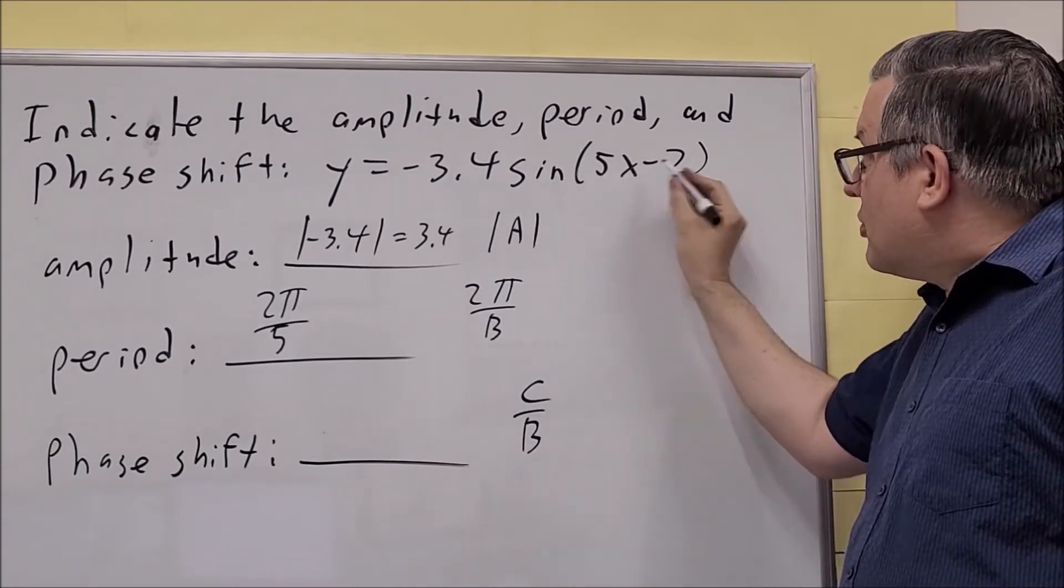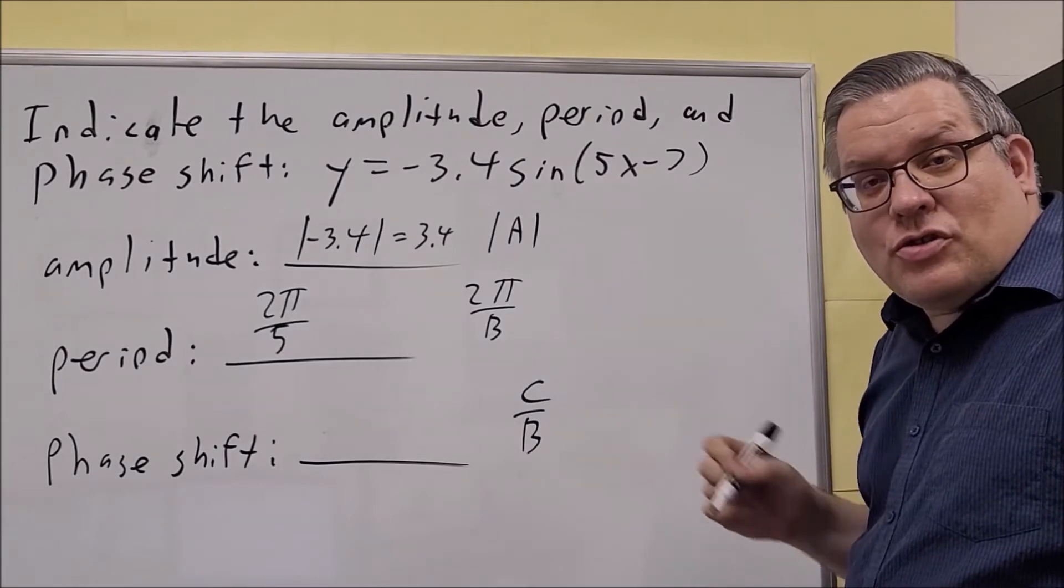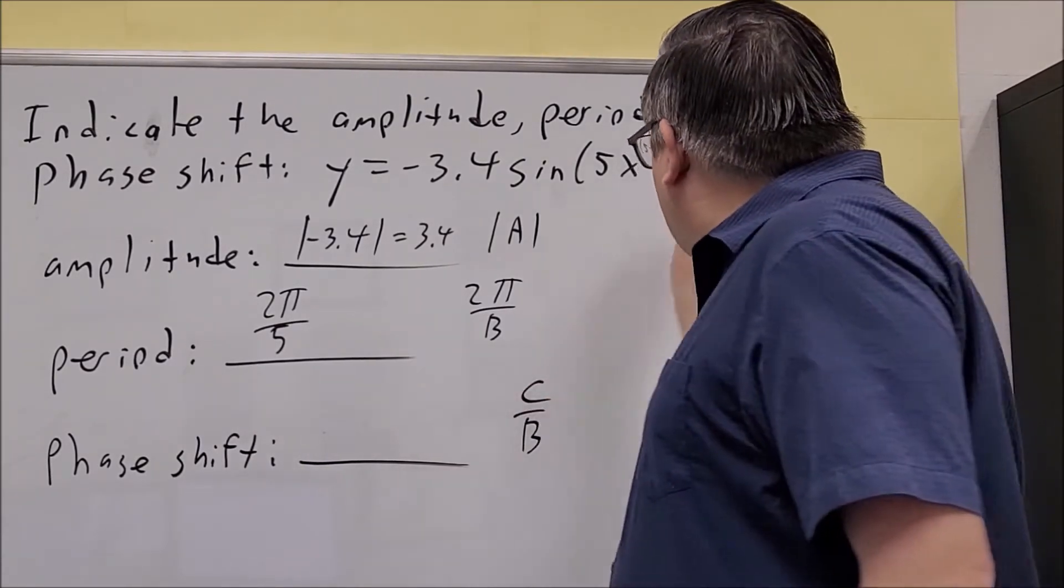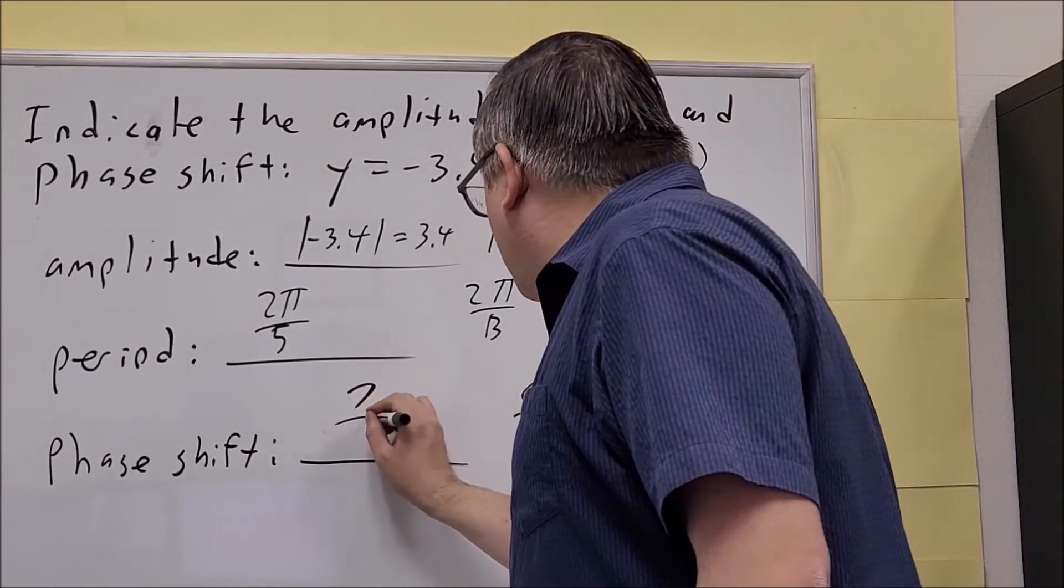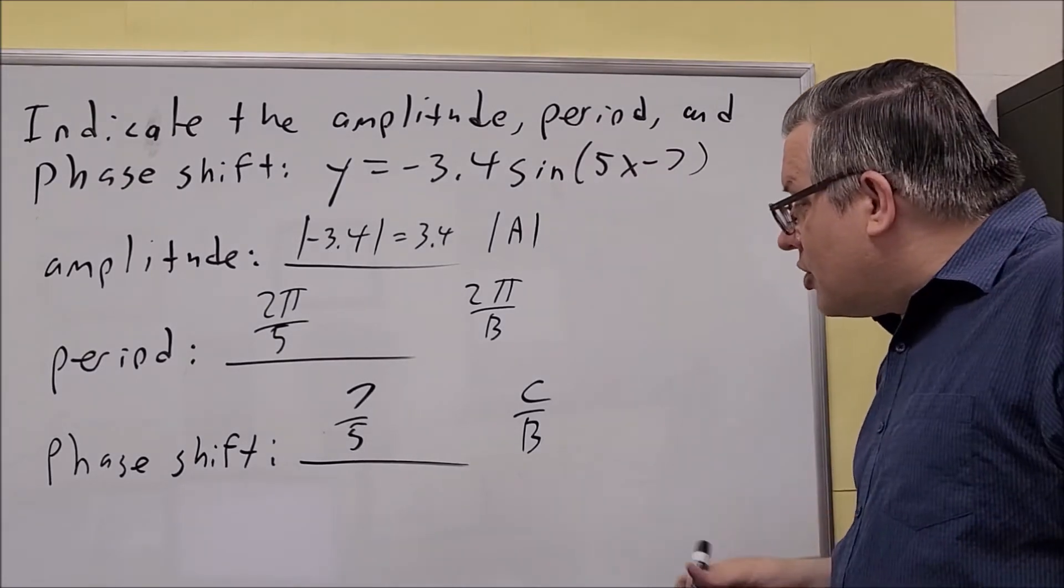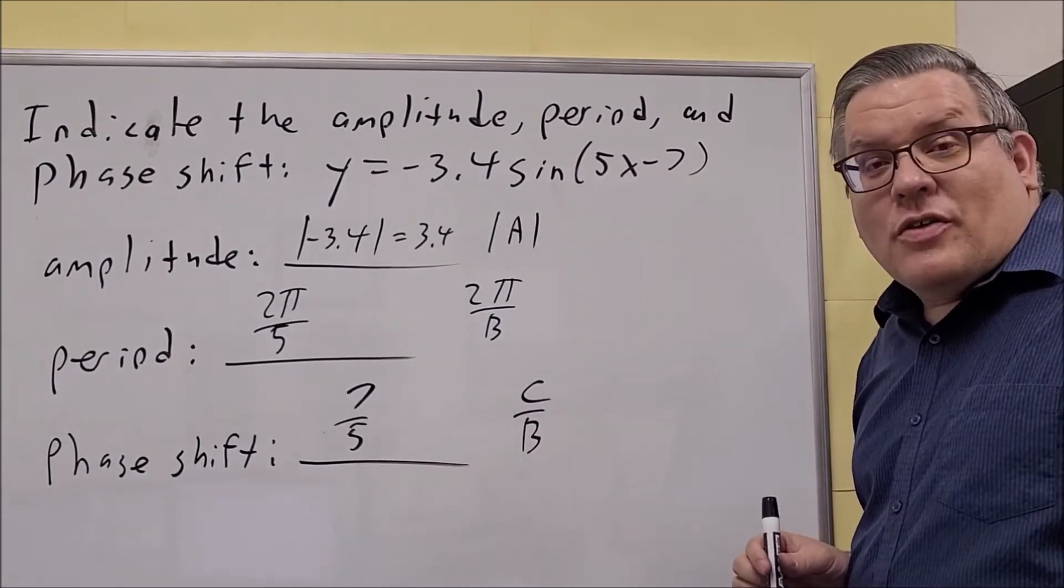But we know for sure because it's a minus there that the graph is going to shift to the right. So our phase shift should be positive. And that's going to be 7 over 5. Okay, that's our C value. And then the B value is right there. So our answer is 7 fifths.